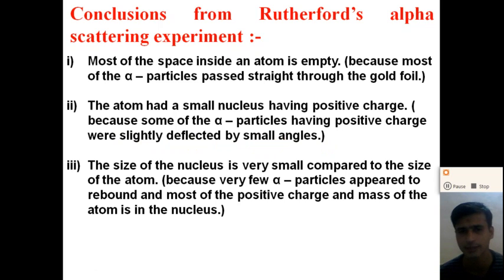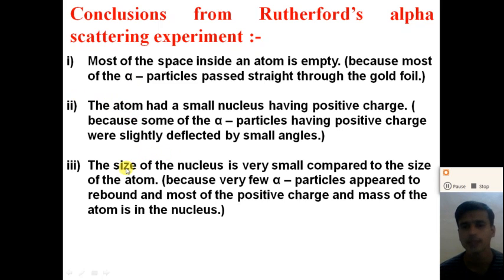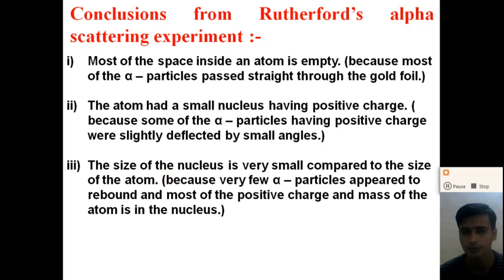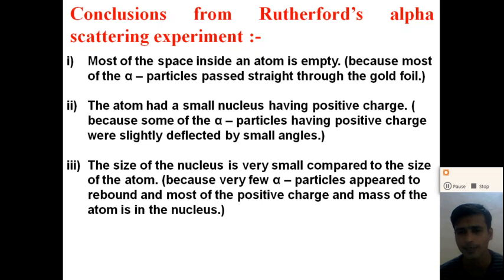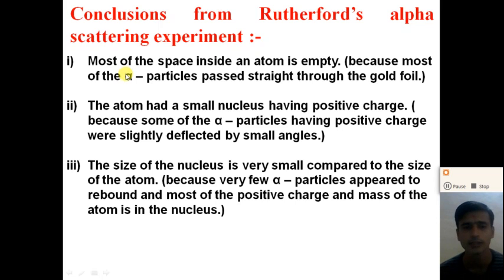In a very small region at the center of the atom, all the positive charge is concentrated. The third conclusion Rutherford made is that the size of the nucleus is very small compared to the size of the atom. Very few alpha particles appeared to rebound, and most of the positive charge and mass of the atom is in the nucleus.